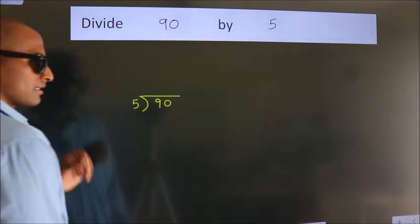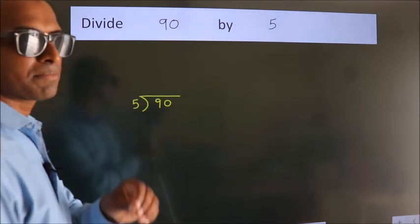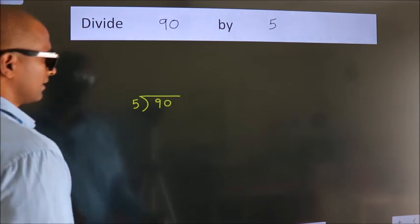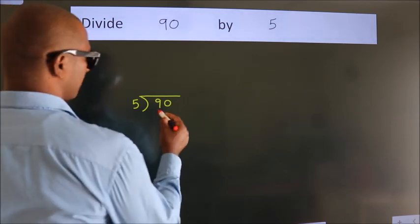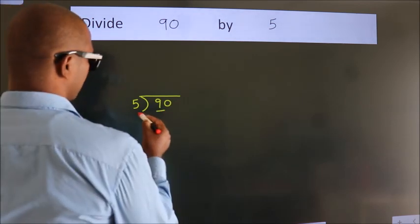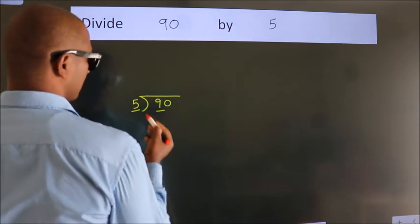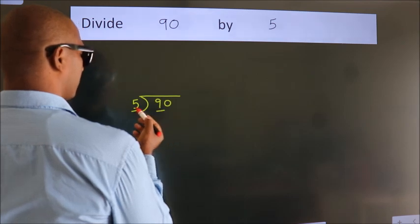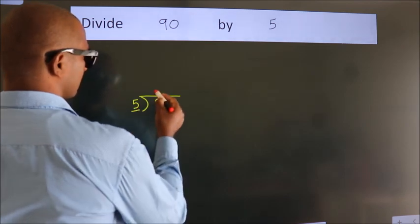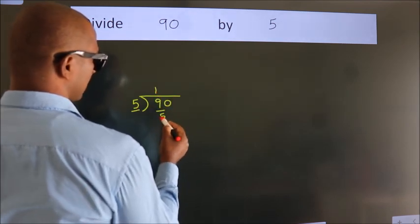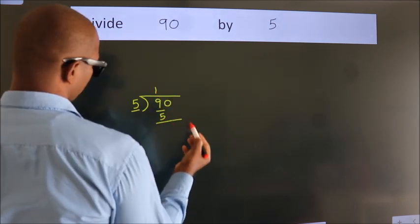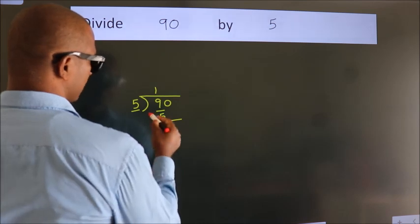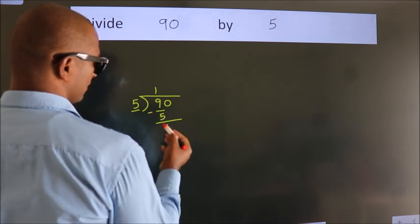This is your step 1. Here we have 9, and here 5. A number close to 9 in the 5 times table is 5 once, which is 5. Now we should subtract. We get 4.